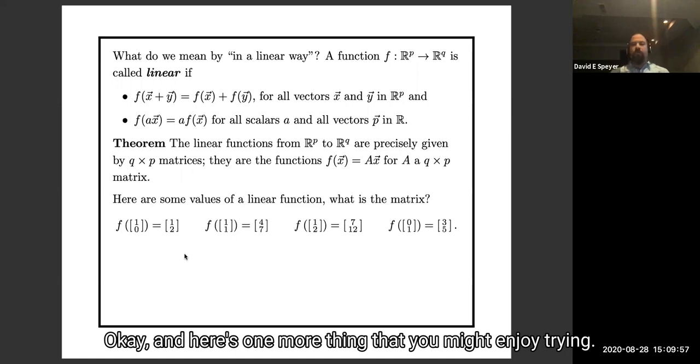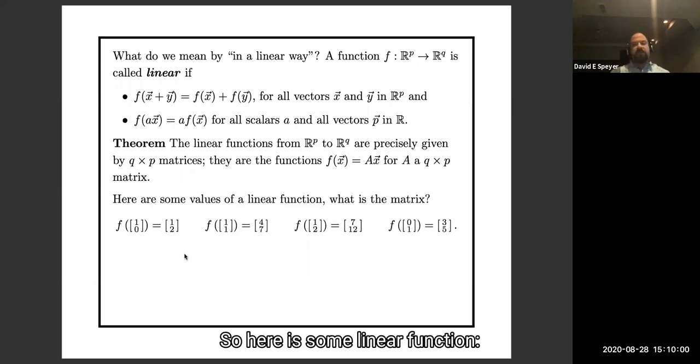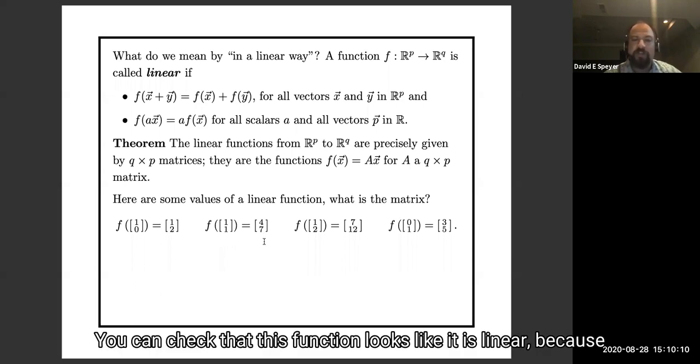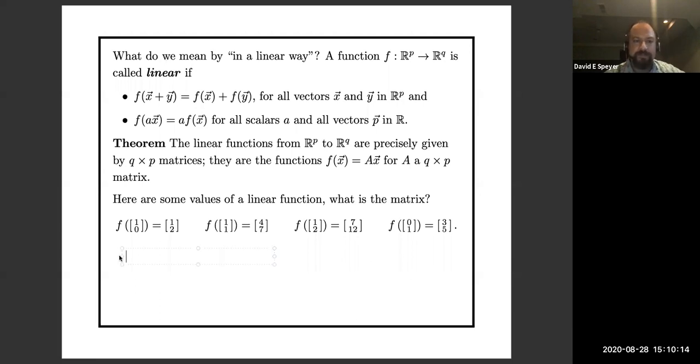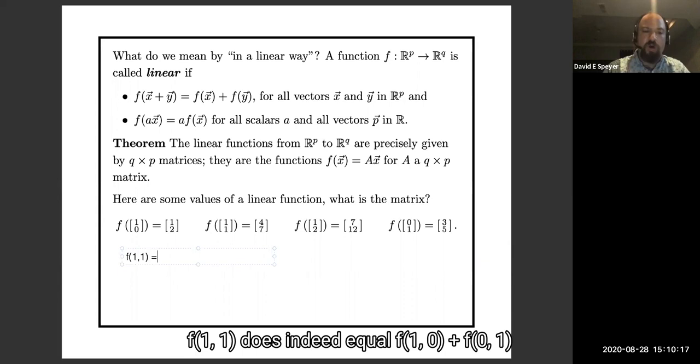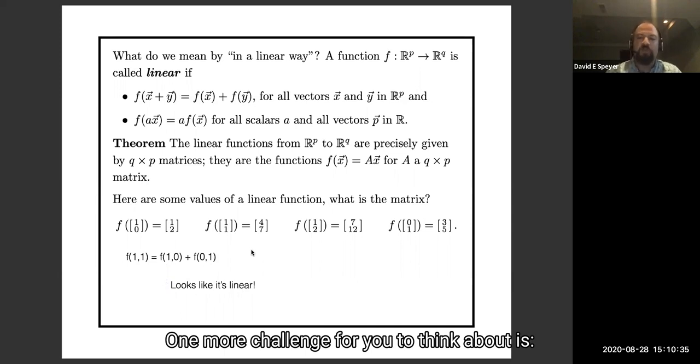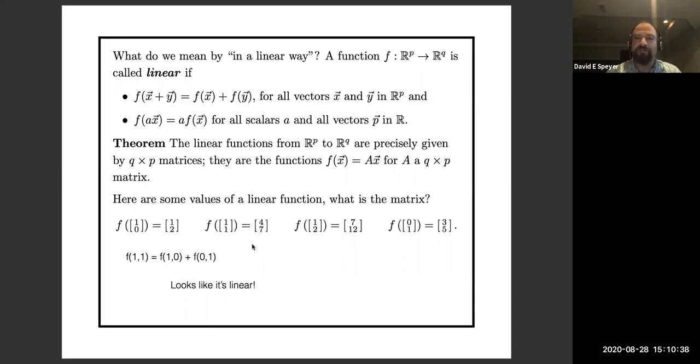Okay. And here's one more thing that you might enjoy trying. So here is some linear function. If my input is 1, 0, my output will be 1, 2. If my input is 1, 1, my output will be 4, 7. You could check that this function looks like it is linear because f of 1, 1 does indeed equal f of 1, 0 plus f of 0, 1. So looks like it's linear. And one more challenge for you to think about is what is the matrix of this function? Again, I'm going to pause, give you a chance to think.